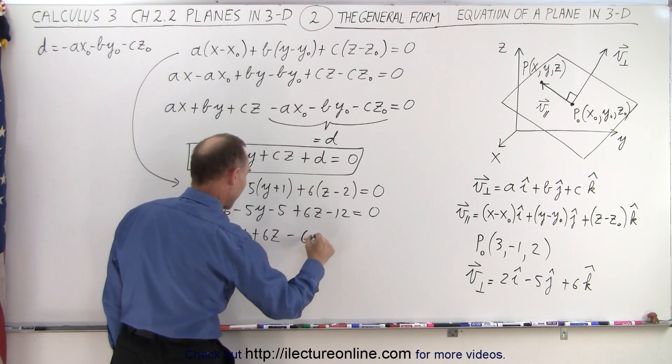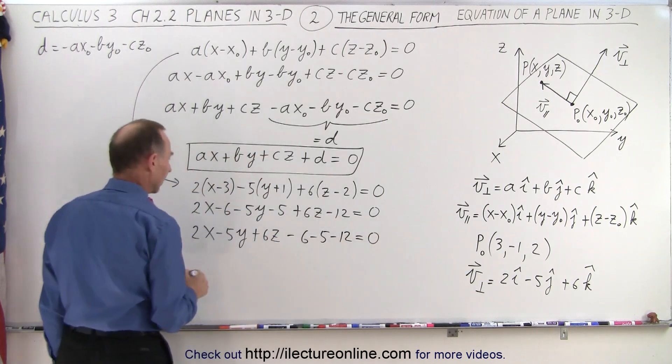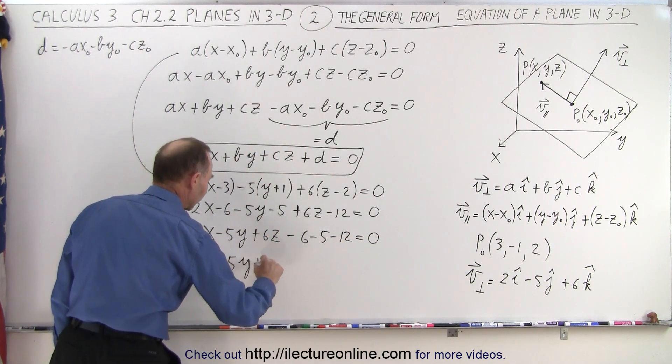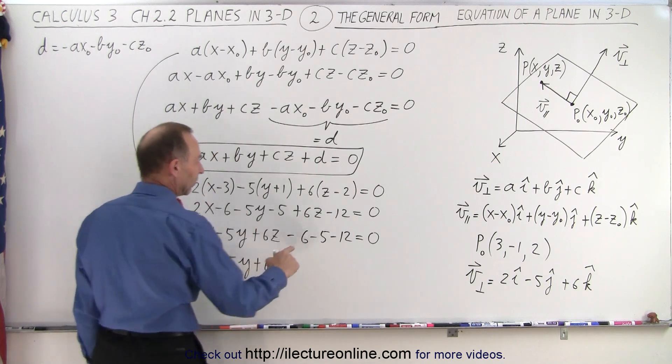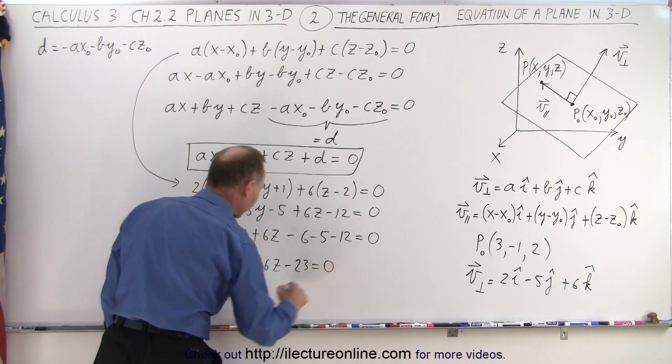Minus 6, minus 6, that's minus 18, minus 23 is equal to 0.